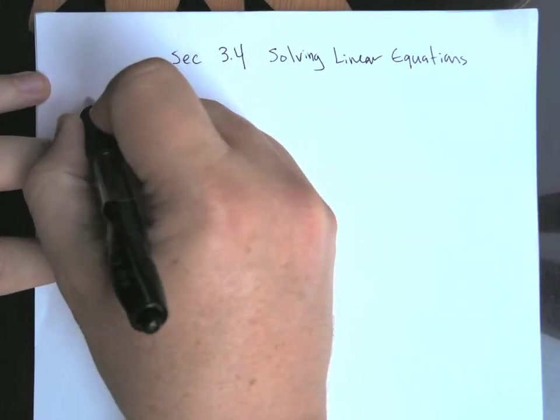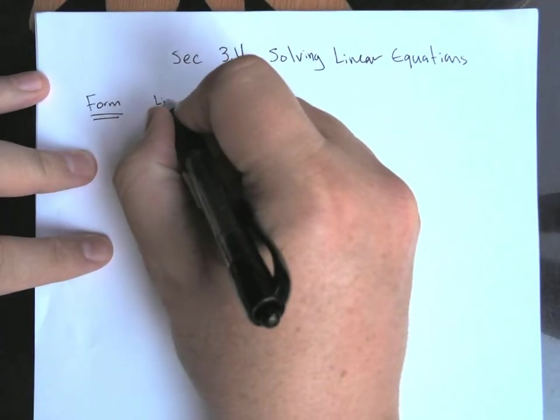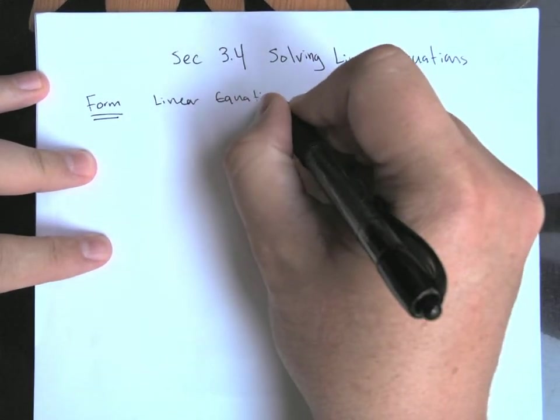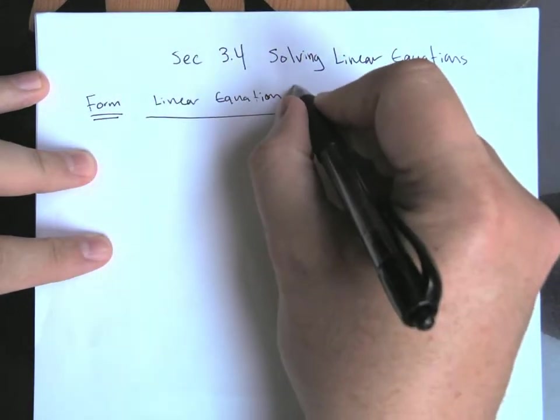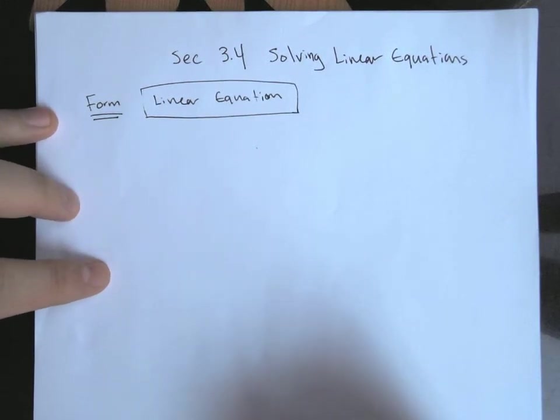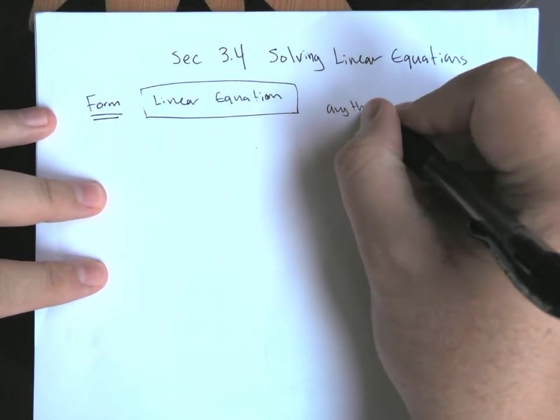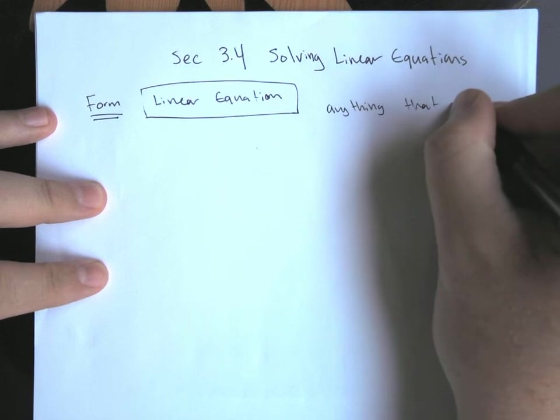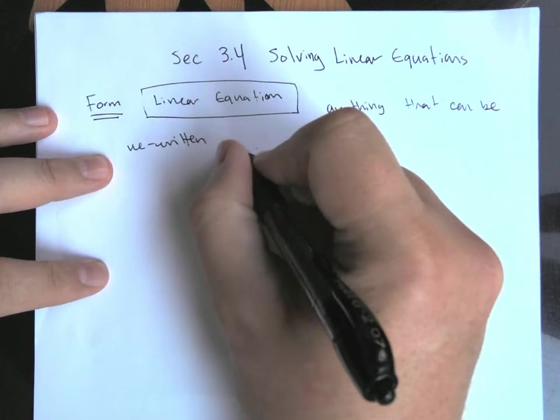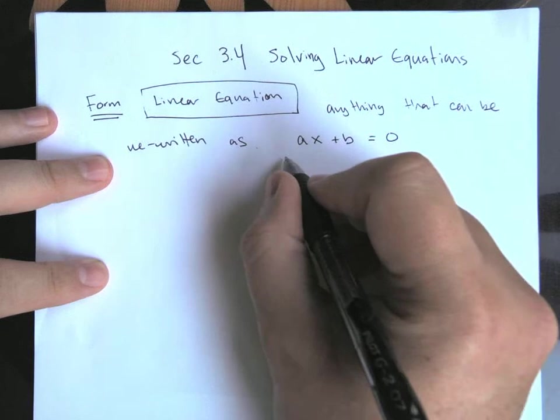So first and foremost, the form for a linear equation. Technically, this is a linear equation in one variable, but we won't be quite as specific as that in our labeling. So the form is going to be anything that can be rewritten as AX plus B equals zero.